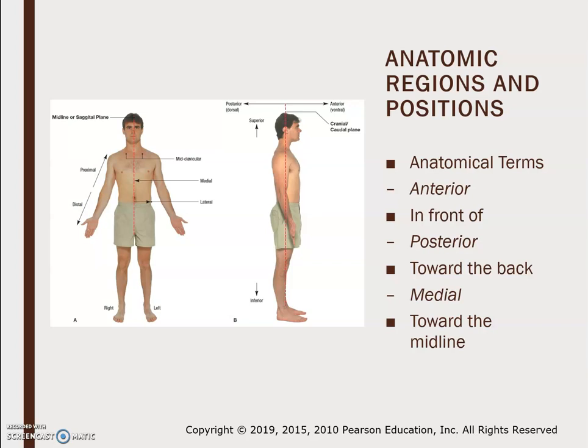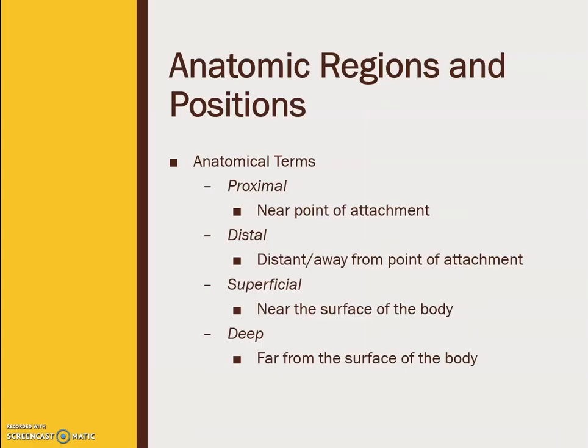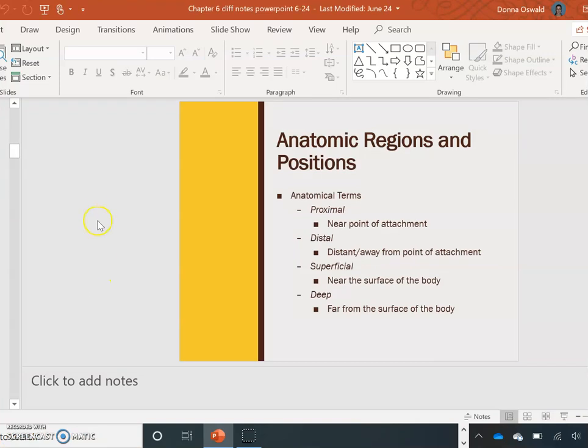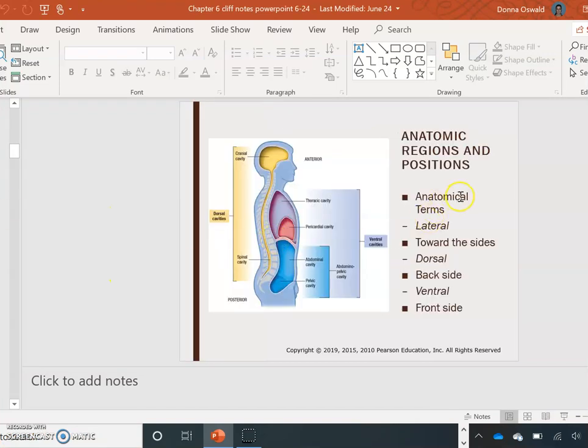Anatomical regions and positions: anterior or ventral is the front, posterior or dorsal is toward the back. Medial is toward the midline. We need to be aware of the planes and positions of the body, as sometimes our laboratory tests are affected by a patient's positioning. Lateral is toward the side, dorsal is the back side, and ventral is the front side.